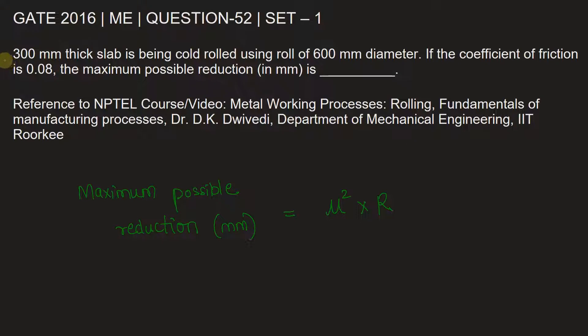This question basically confuses you with the thickness of the slab and the roller diameter given. You have to appropriately substitute the coefficient of friction (0.08)² into radius, being half of diameter, that is 600 by 2.